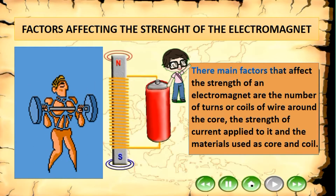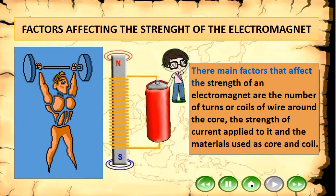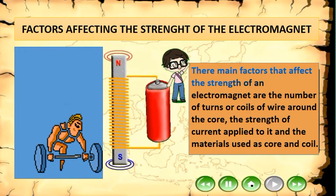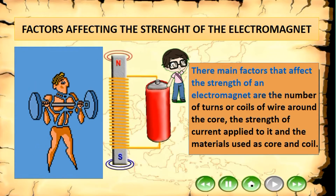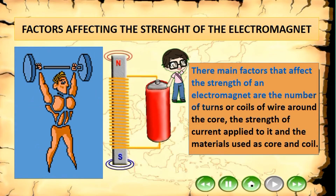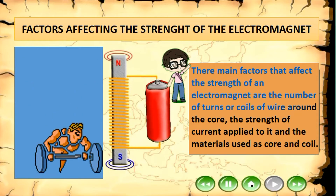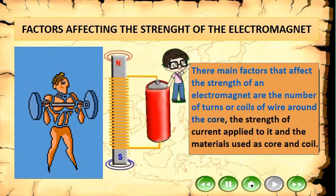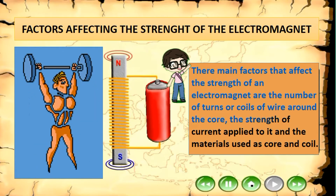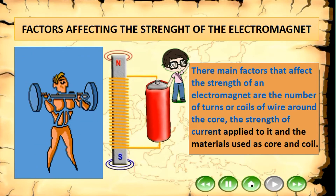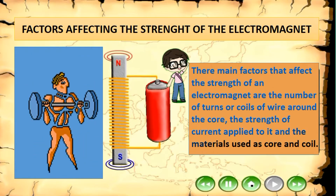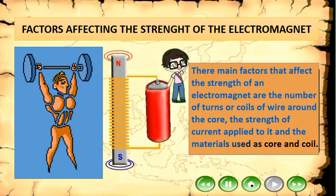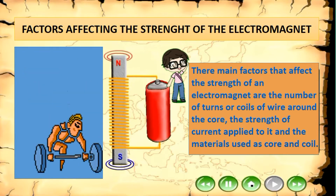The main factors that affect the strength of an electromagnet are: the number of turns or coils of wire around the core, the strength of current applied to it, and the materials used as core and coil.